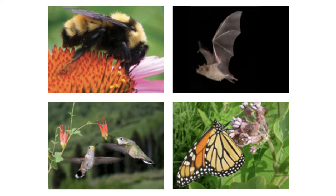I wanted to highlight our four main pollinators. Clearly we have our bee — we've spent lots of time talking about bees already. But we also have hummingbirds and butterflies. These three have something in common, which is basically what they're getting from the plant. The bee, the hummingbird, and the butterfly are all getting nectar from the plant. That's the food source that comes from the flower that brings these pollinators to it.